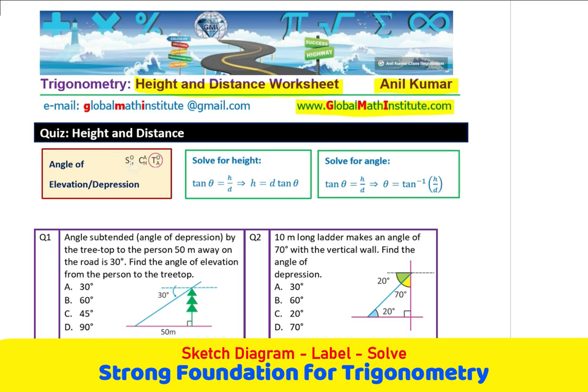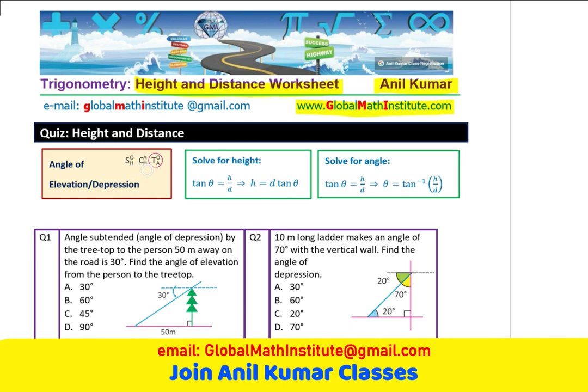We are looking into the trigonometric ratio sine, cosine and tangent. Sine is opposite over hypotenuse. Cosine is adjacent over hypotenuse. Tan is opposite over adjacent. We will talk about angle of elevation and angle of depression. The angle of elevation is from the ground looking up and angle of depression is from up looking down along the line of sight as shown here.